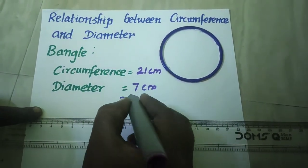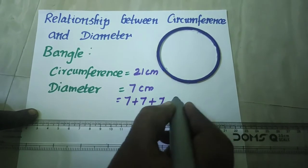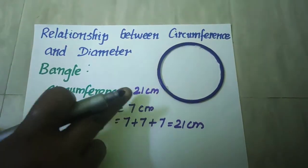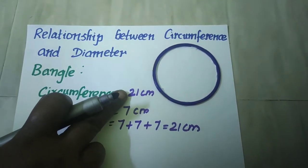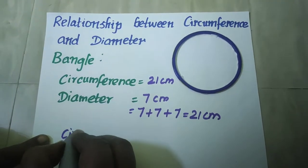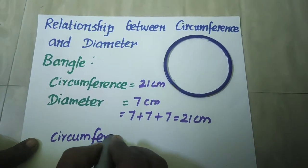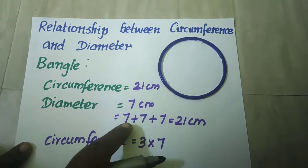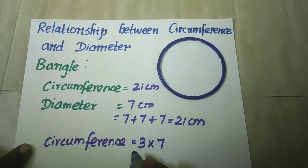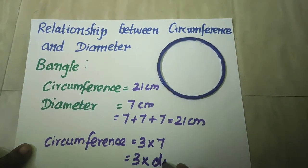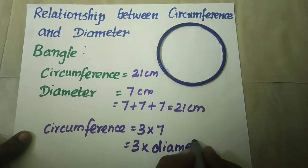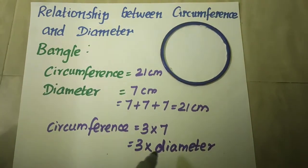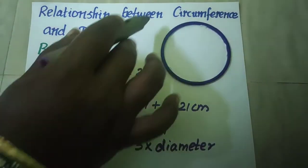That is 7 plus 7 plus 7, that is equal to 21 centimeters. That 21 centimeters is your circumference. Now can we write the circumference as 3 into 7, that is 3 times 7. This 7 is your diameter. That is 3 into diameter. Now you got the relationship between circumference and diameter. Three times your diameter makes your circumference.